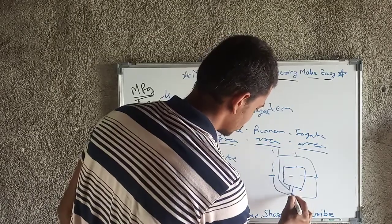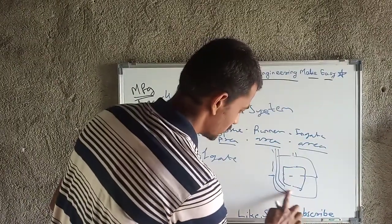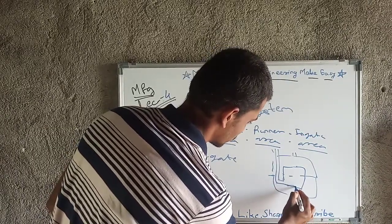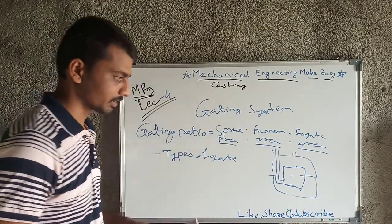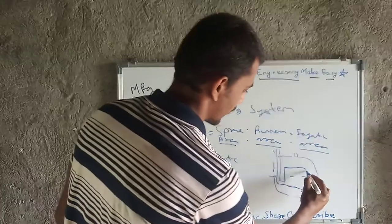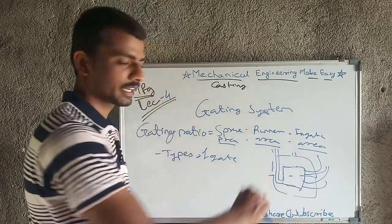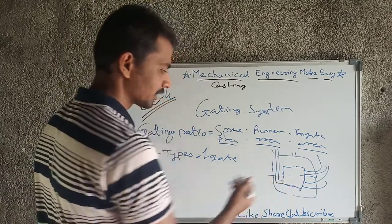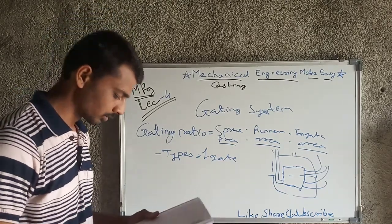Bottom gate means the gate is provided at the bottom of the cavity, with the sprue and runner arranged accordingly. Side gate means the gate is at any side, not directly on the parting line — it may be at the bottom or at any height of the cavity. The parting line gate is also one kind of side gate. These are the four types of gates.